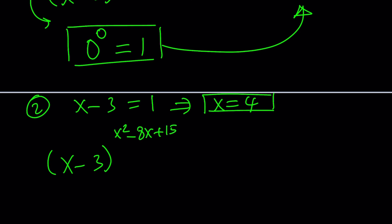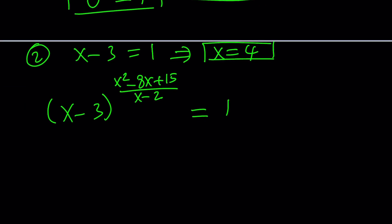Is that also true when you raise it to a complex power? Yes, it should always be 1. And in this case, if you replace x with 4, you're going to get 1 to the power, any number. It doesn't matter, but let's evaluate it. 16 minus 32 plus 15, that's 31. That's a negative 1 over what is the x-2. That will be a 2.